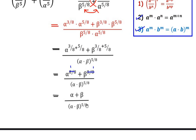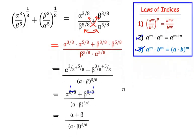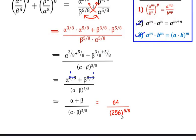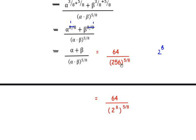We already have alpha plus beta equals 64 and alpha times beta equals 256. Substituting these values, we get 64 / 256^(5/8). Now 256 can be written as 2^8, so we replace 256 with 2^8, giving us 64 / (2^8)^(5/8).